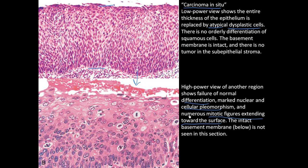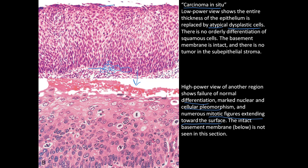This is important: in normal skin, you have a basal layer where cells replicate and daughter cells get pushed upward, eventually sloughing off at the surface. Mitotic division is normally confined to this basal layer. If you see mitotic division in cells near the top surface, that's abnormal — that's dysplasia. You can identify mitotic figures as elongated, darkened blobs inside the nucleus or cell.